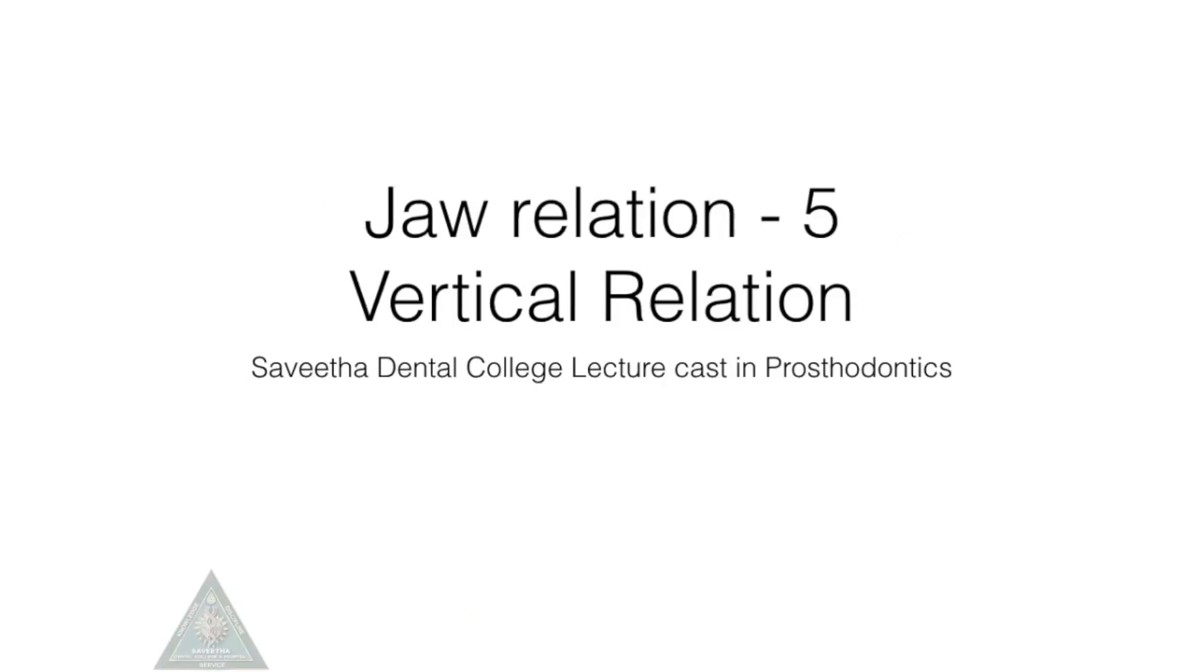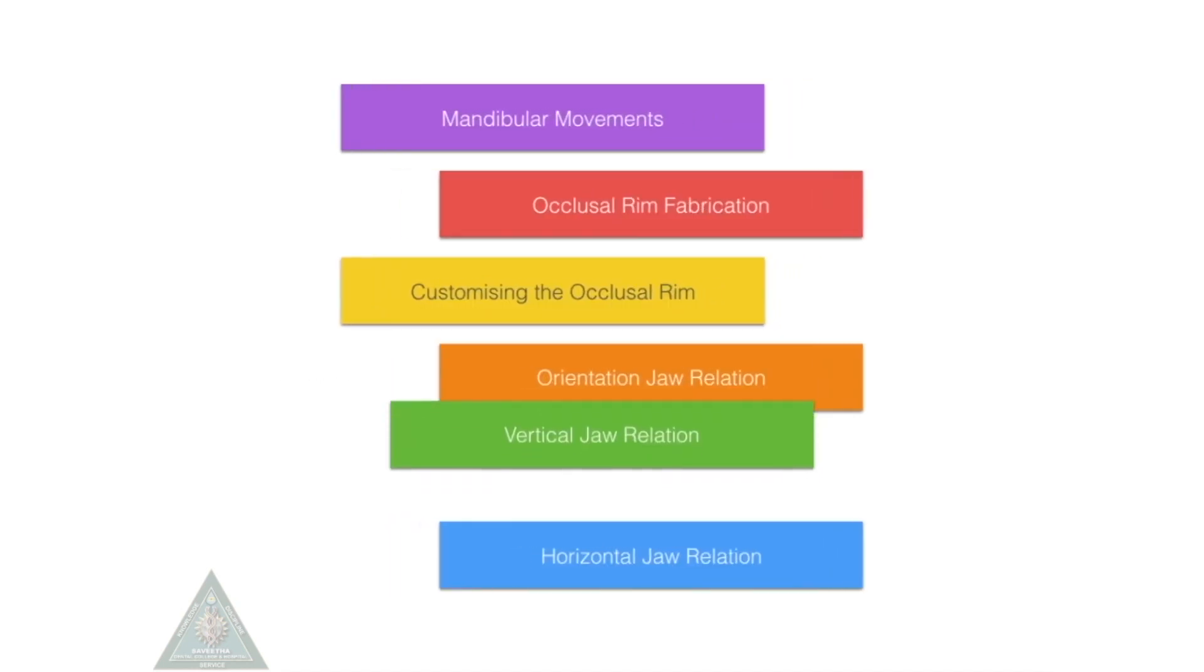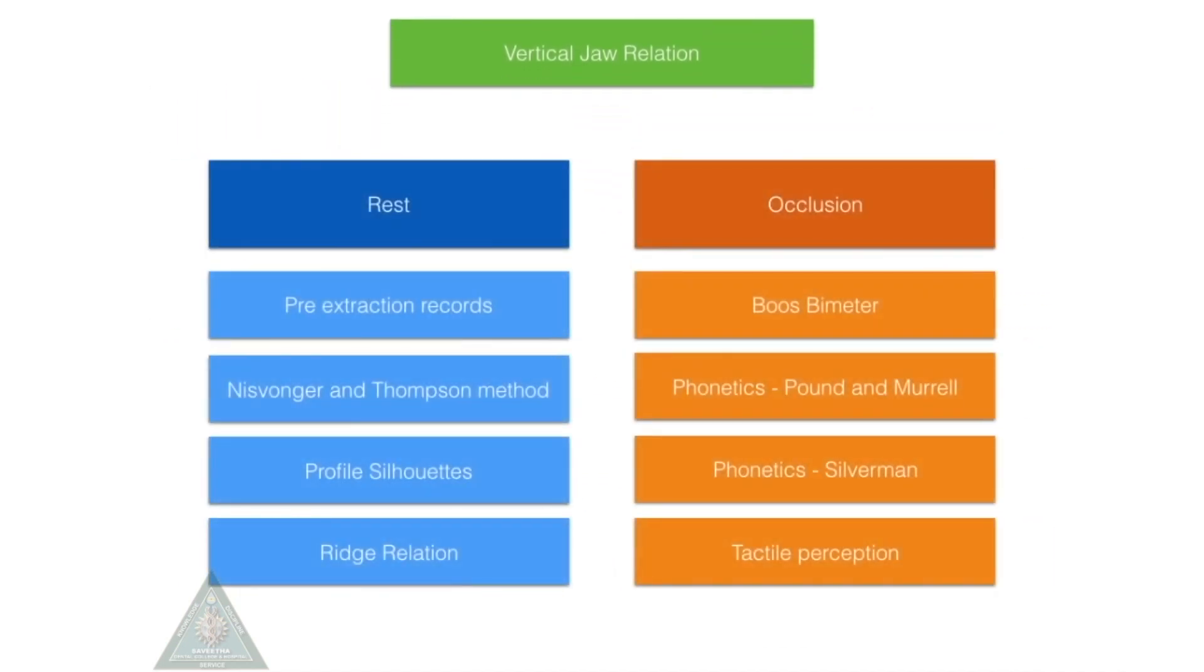Welcome to Savita Dental College lecture cast in prosthodontics jaw relations part 5, vertical relation. Vertical jaw relation has two measurements: vertical dimension at rest and vertical dimension at occlusion. When at rest there will be a space between the teeth, around 2 to 3 millimeters, called freeway space.